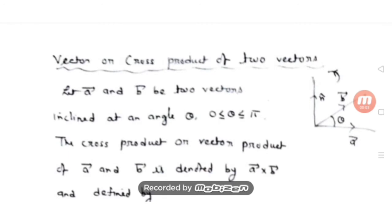Hello students, hope you have done the previous classes on vectors. In the last classes we discussed that the product of vectors can be defined in two ways: one is the dot product or scalar product, and the second is the vector product or cross product. We have already discussed the dot product. Today I'm going to explain what is the vector product or cross product and some of its properties.